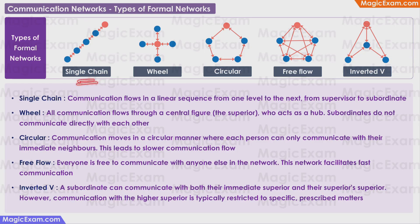In a single chain network, communication flows in a linear sequence, from one level of the hierarchy to the next, that is, from superior or supervisor to the subordinate.